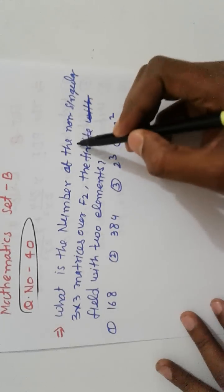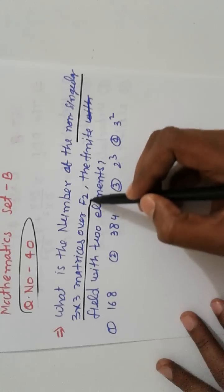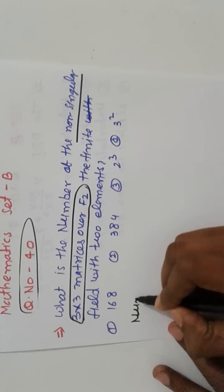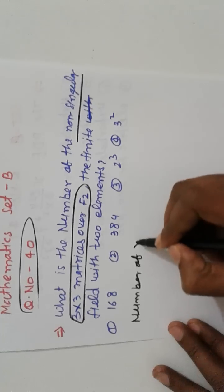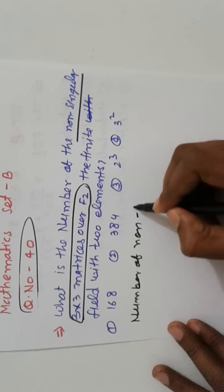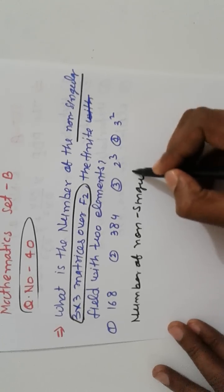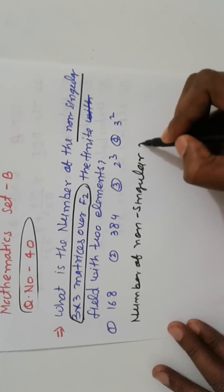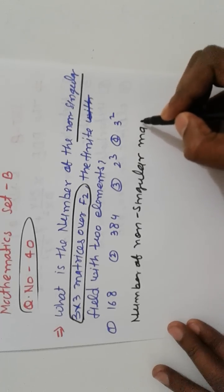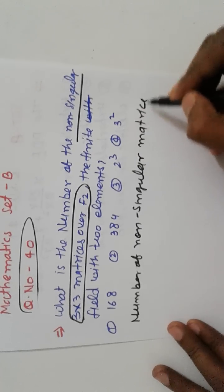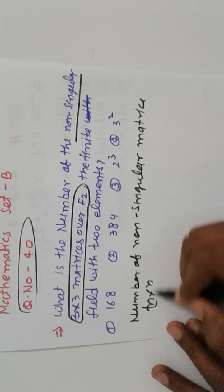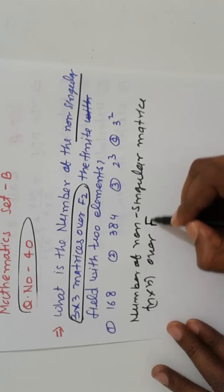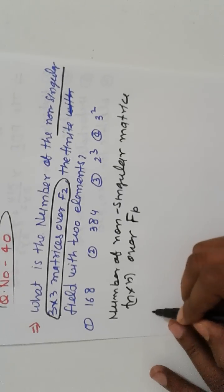This is what is the number of non-singular three-by-three matrices of F of 2. So number of non-singular matrices n cross n over F of p.